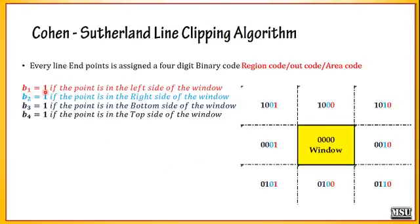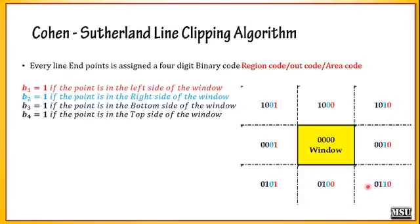b1 equals 1 if the point is on the left side of the window. The yellow-colored portion is the window. The part to the left of the window has b1 equal to 1. There are totally 9 regions around and including the window. The left side regions have b1 equal to 1, and the remaining six regions have b1 equal to 0. When b2 is 1, the point is on the right side of the window — three right-side regions have b2 equal to 1 and the remaining six have b2 equal to 0.